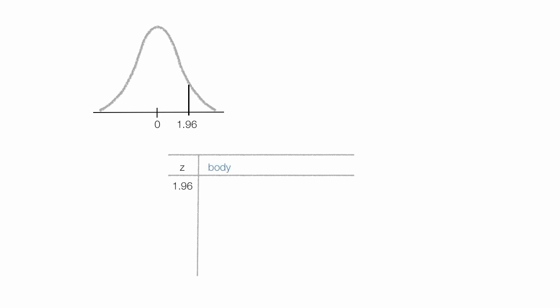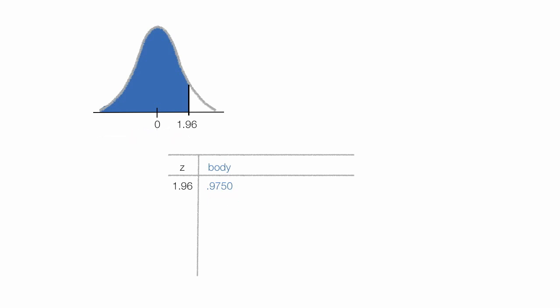The body, or the blue area of the bell curve, is the probability that an observation has a z-score less than 1.96. So in this case, the value is 0.9750, or 97.5%. The tail, or the green area, is the probability that an observation has a z-score greater than 1.96, and in this case it's 0.0250, or 2.5%.